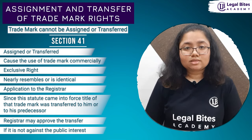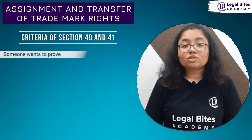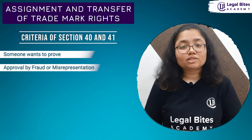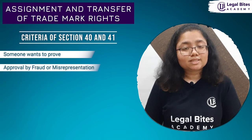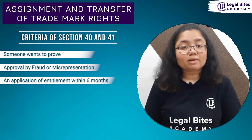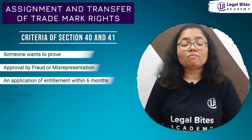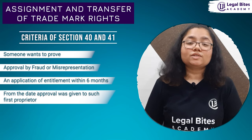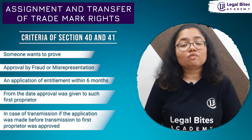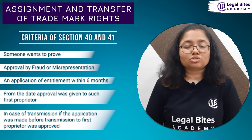Now in both the above cases, that is sections 40 and 41, if someone wants to prove that the approval by the proprietor was obtained from the registrar by fraud or misrepresentation, he can do so if he has made an application of entitlement, that is registration, to the registrar within six months from when the approval was given to such first proprietor, or in case of transmission, if his application was made before the time when the transmission to first proprietor was approved by the registrar.